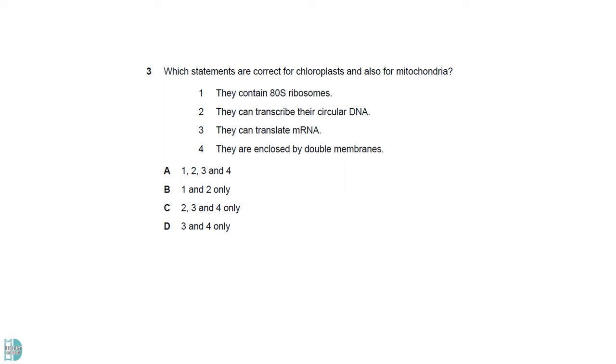We need to identify statements that are correct for both chloroplasts and mitochondria. One is incorrect, as they both contain 70S ribosomes. Two is correct, they have circular DNA.